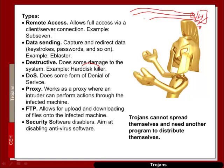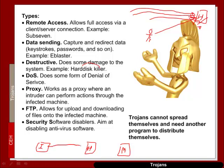A worrying type of Trojan is the denial-of-service one. Trojans can be set up on machines and used to create a denial-of-service attack against another host. A proxy Trojan allows an intruder to use a host as a stop-off point to attack another machine. FTP Trojans allow uploading and downloading of files onto an infected machine, and security software disablers attempt to disable antivirus software.